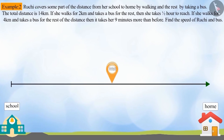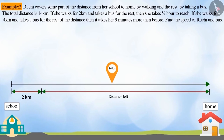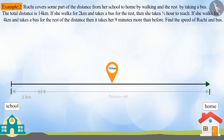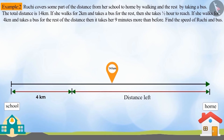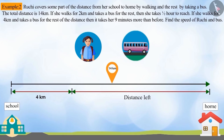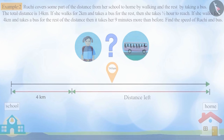Ruchi covers some part of the distance from her school to home by walking and the rest by taking a bus. The total distance is 14 kilometers. If she walks for 2 kilometers and takes a bus for the rest, she takes half an hour to reach. If she walks for 4 kilometers and takes a bus for the rest, it takes her 9 minutes more than before. Find the speed of Ruchi and the bus.